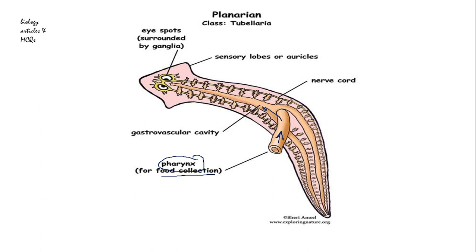Then the food passes into both the anterior and lateral branches of the intestine. Gland cells present in the intestine digest it further. This is all extracellular digestion — intracellular digestion has not started yet at this stage.